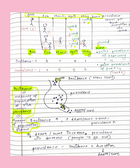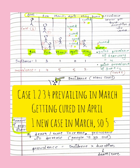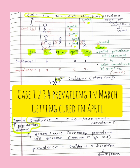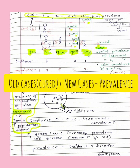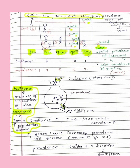Prevalence in March is five, because all cases are still prevailing. Cases two, three, and four are getting cured in April, while case one is getting cured in May — so all five must be included since the disease is still prevailing. Prevalence in April is also five, as we take old and new cases. Prevalence in May drops to two.